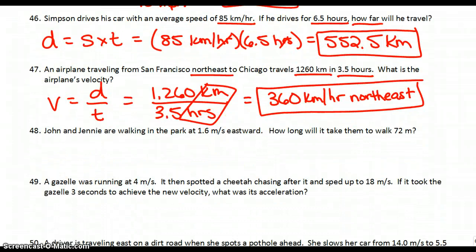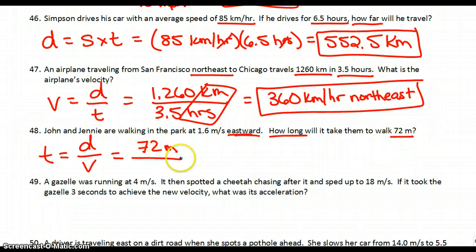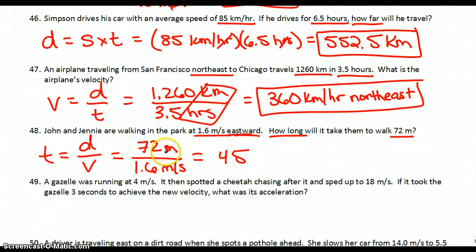48: John and Jenny are walking in the park at 1.6 meters per second eastward. How long will it take them to walk 72 meters? "How long" clues you in that you're solving for time — distance over velocity. Distance is 72 meters and velocity is 1.6 meters per second east. That gives you 45. Meters on top and bottom cancel, leaving us with seconds. It only takes 45 seconds.